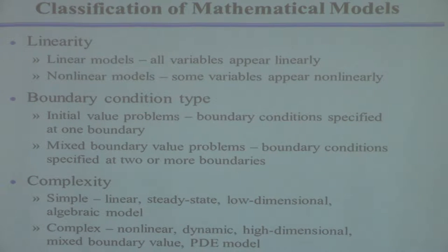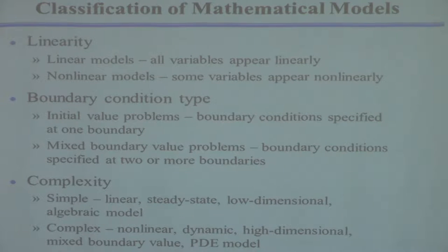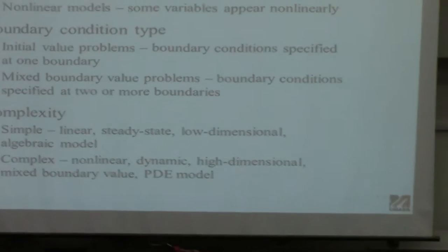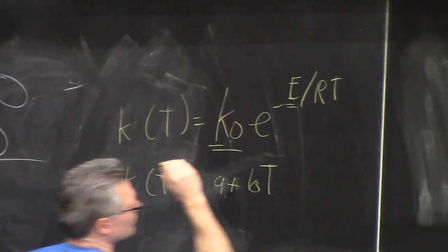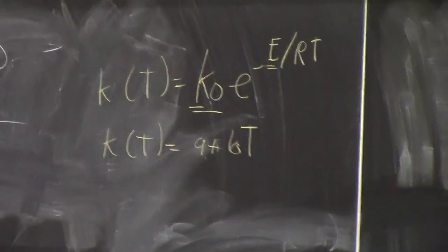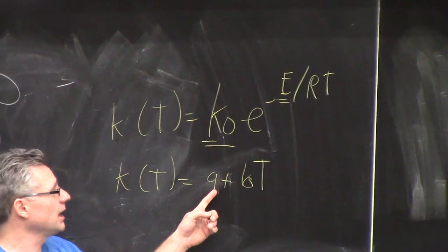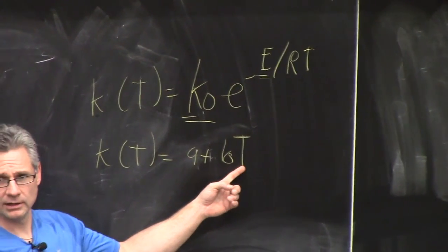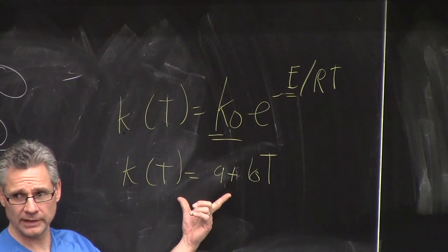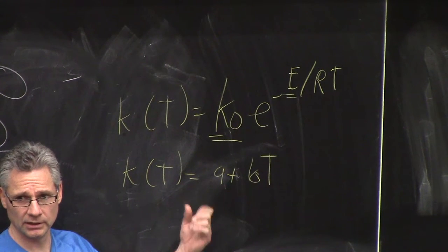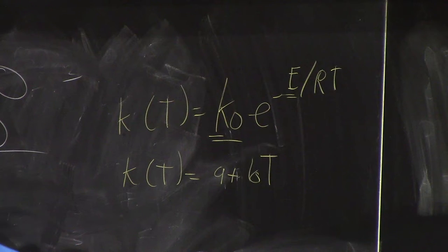If the model is nonlinear — meaning some variables appear in a nonlinear way — for example, this temperature appears in a noticeably nonlinear way: it appears in an exponential term. If something appears in a linear way, it would be like the reaction rate equals some constant A plus some constant times temperature. That's a linear relationship; it depends linearly on temperature. Linear models are much, much easier to deal with, as we'll see.